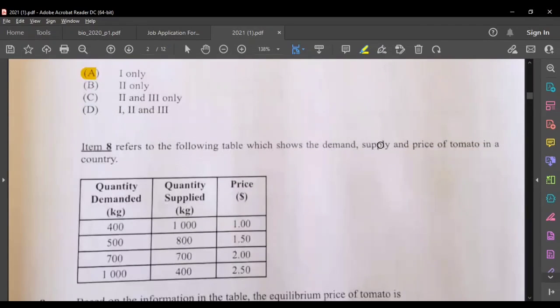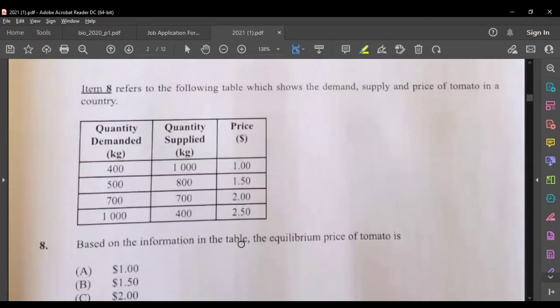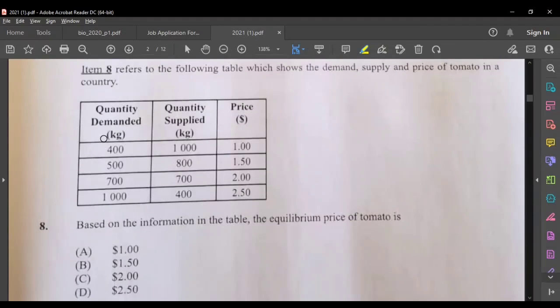Question eight refers to the following table which shows the demand, supply and price of tomatoes in a country. Based on the information that is given on this table, the equilibrium price of tomato is, well the equilibrium price is when the demand and the supply are equal to one another and looking at the two of them we see that here is where the demand and the supply is equal, so the equilibrium price would be two dollars and that would be C.